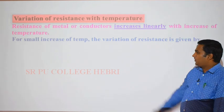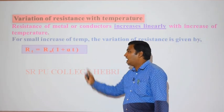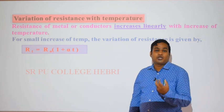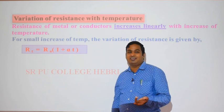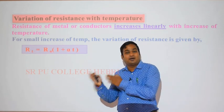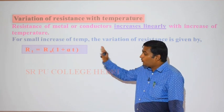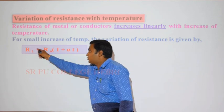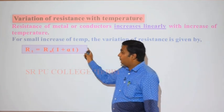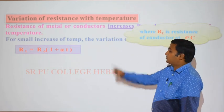For a small increase of temperature, the variation of resistance is given by the equation: RT equals R0 into (1 plus alpha T). This is similar to the thermal expansion formula from first year — L2 equals L1 into (1 plus alpha T), and volume V2 equals V1 into (1 plus gamma T). This equation represents a straight line, just like Y equals MX plus C.